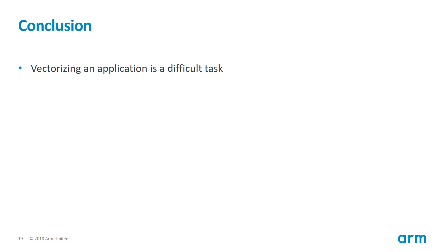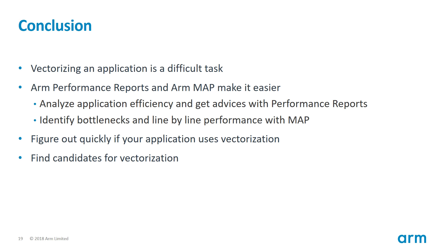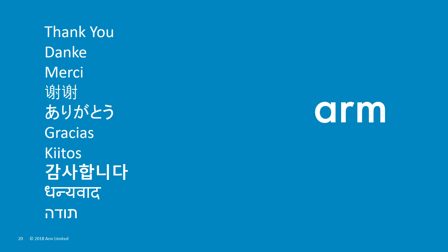This leads me to the conclusion of the presentation. To recap, vectorization is a difficult task, but tools such as ARM Performance Reports and ARM Map make it easier. By using ARM Performance Reports with just the application executable, you can quickly and easily identify if an application makes good use of vectorization. With ARM Map, you can inspect vectorization over time and easily identify application bottlenecks and candidates for vectorization. Thank you very much for attending this webinar, which gave you an overview of the ARM HPC tool suite capabilities. We are now going to start the questions and answer session.